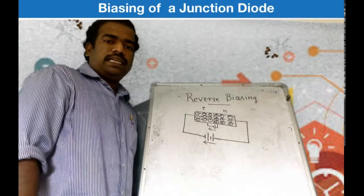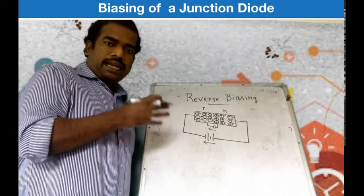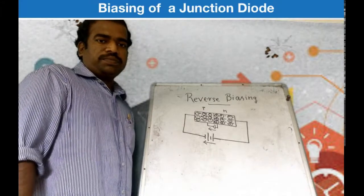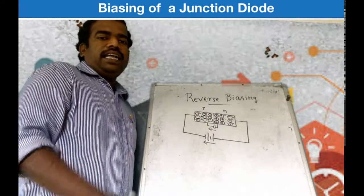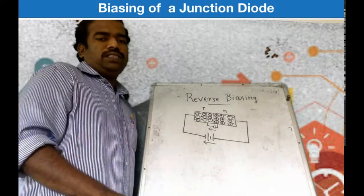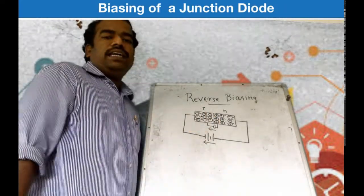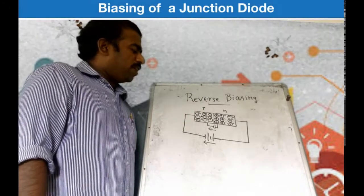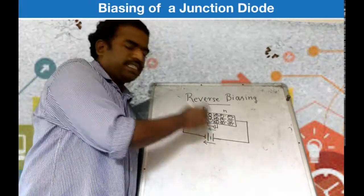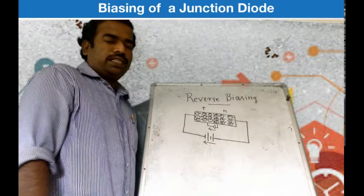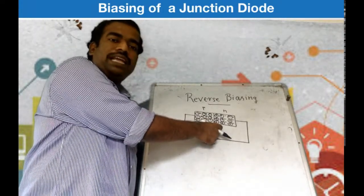The external reverse bias voltage is in the same direction as the internal potential barrier field, which means it enhances the electric field near the junction. The electrons and holes near the junction will be attracted away from the junction due to this reverse voltage, because it enhances the electric field.